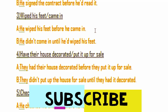Now let's talk about right order. Example: wiped his feet, came in. Before coming in, the person wiped his feet — that is right order. Option A: he wiped his feet before he came in — subject, first action V2, before, subject, second action V2. Option B: he did not come in until he had wiped his feet — subject + did not + V1 + until + subject + had + V3.